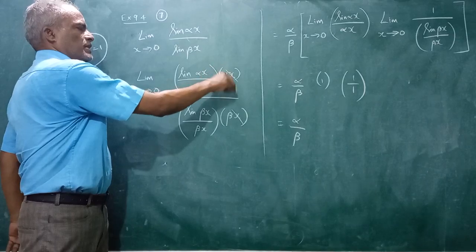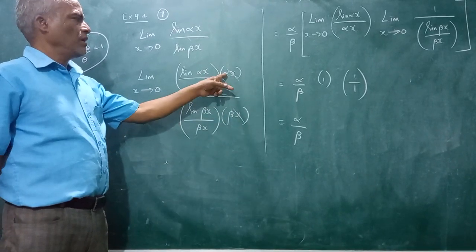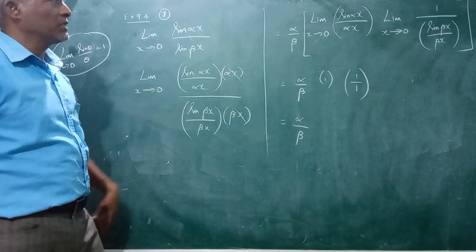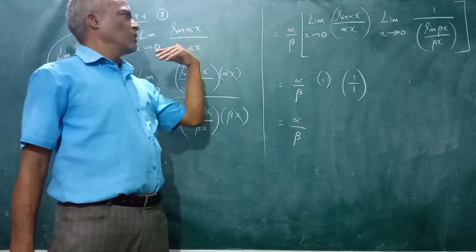Now what we do is, this x and this x cancel, alpha divided by beta is a constant, you are pulling the term outside, so alpha and beta is pulled outside.